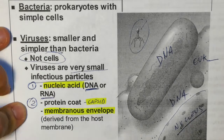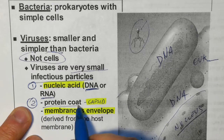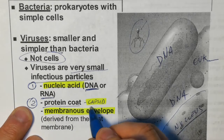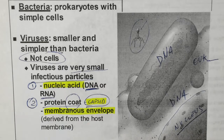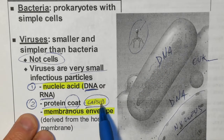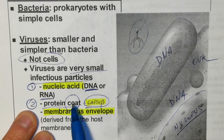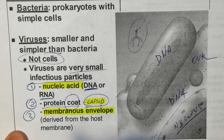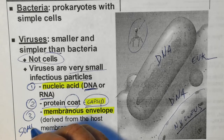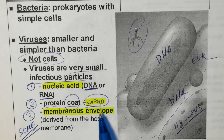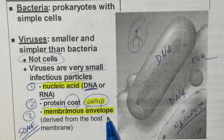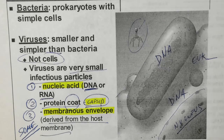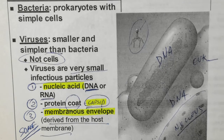The second component that you are going to have in a virus is what is called a protein coat, or a capsid. Basically, this is a protein or a bunch of proteins that cover and protect the nucleic acid. And finally, some viruses — not all of them — are going to have what is called a membranous envelope. Basically it's a membrane, but that membrane they took from one of the cells that they infected.